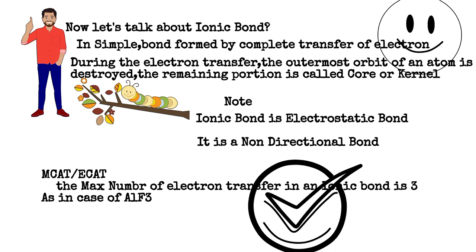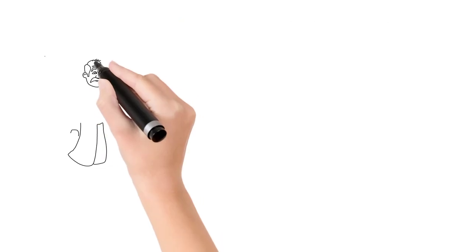The maximum number of electrons transferred in an ionic bond is three, as in the case of AlF3.